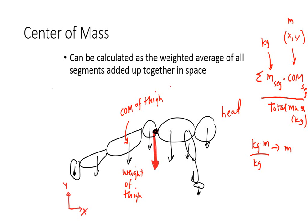For example, if you take this weighted average but forget to divide by the total mass, you'll end up with units of kilogram-meters rather than meters — which tells you something is wrong. By checking your units, you can verify that your center of mass location should be x and y coordinates in meters. So in this case, you could take a weighted average and end up with the body's center of mass located at a specific point.